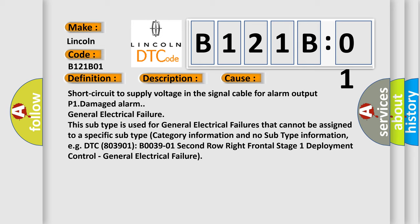This subtype is used for general electrical failures that cannot be assigned to a specific subtype category information and no subtype information, e.g., DTC B03901 second row right frontal stage 1 deployment control, general electrical failure. The airbag reset website aims to provide information in 52 languages.